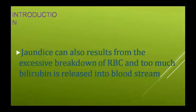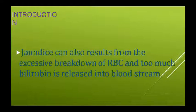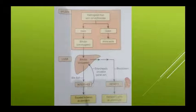जब RBC का breakdown बहुत ज़्यादा होता है तो उसकी वजह से बहुत ज़्यादा bilirubin release होता है blood stream में, जिसकी वजह से पीलिया नाम की बीमारी हो सकती है। यह इसकी pathophysiology है — hemoglobin जो है वो erythrocyte से release होता है, heme और globin अलग हो जाते हैं। Globin तो amino acid में चला जाता है और heme से bilirubin निकलता है, यह unconjugated bilirubin होता है जो blood में रहता है।